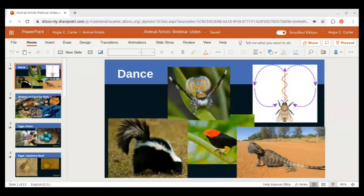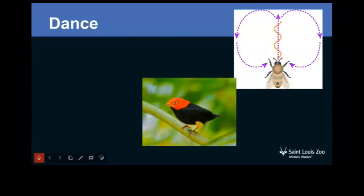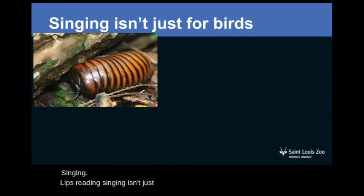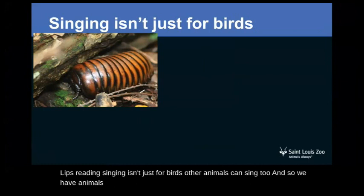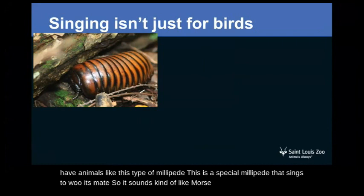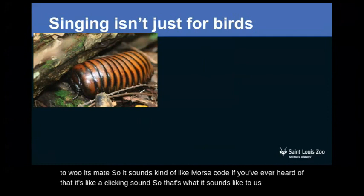This next slide is about singing. Singing isn't just for birds — other animals can sing too. We have a special type of millipede that sings to woo its mate. It sounds kind of like Morse code — a clicking sound. That's how they impress their partner and tell them they're not a predator trying to eat them. So it's a way to communicate.